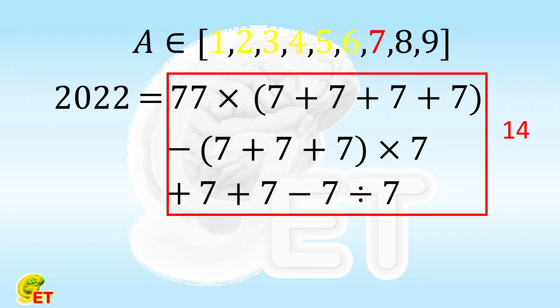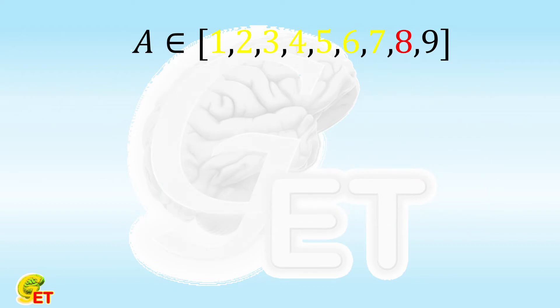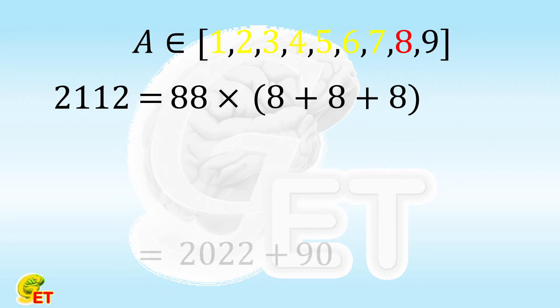Now it's 8's turn. If we choose 88, we need to multiply it by a number that is smaller than 28. Luckily we have 3 times 8, which is equal to 24. 88 times 24 equals 2112. It is bigger than 2022 by 90.